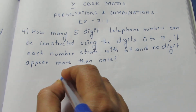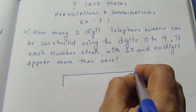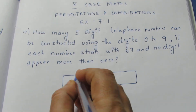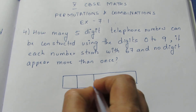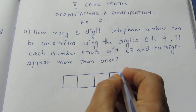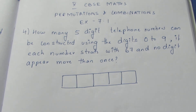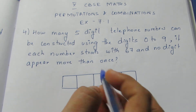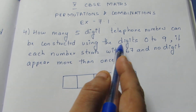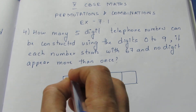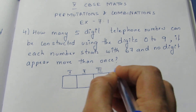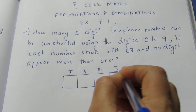That is a 5-digit telephone number. Let me put 5 boxes for this 5-digit telephone number. This will be my first digit, second digit, third, fourth, and fifth.